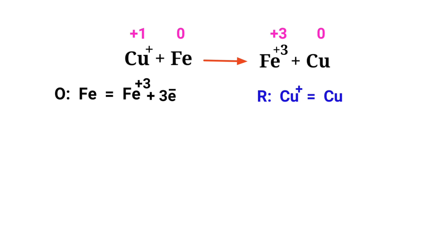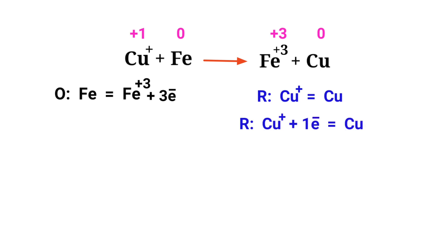Now you can equal the addition of charges in the reduction half reaction. Both sides are not equal, so add 1 electron to the left side to make it equal to 0. Now the addition of charges is equaled in the reduction half reaction.